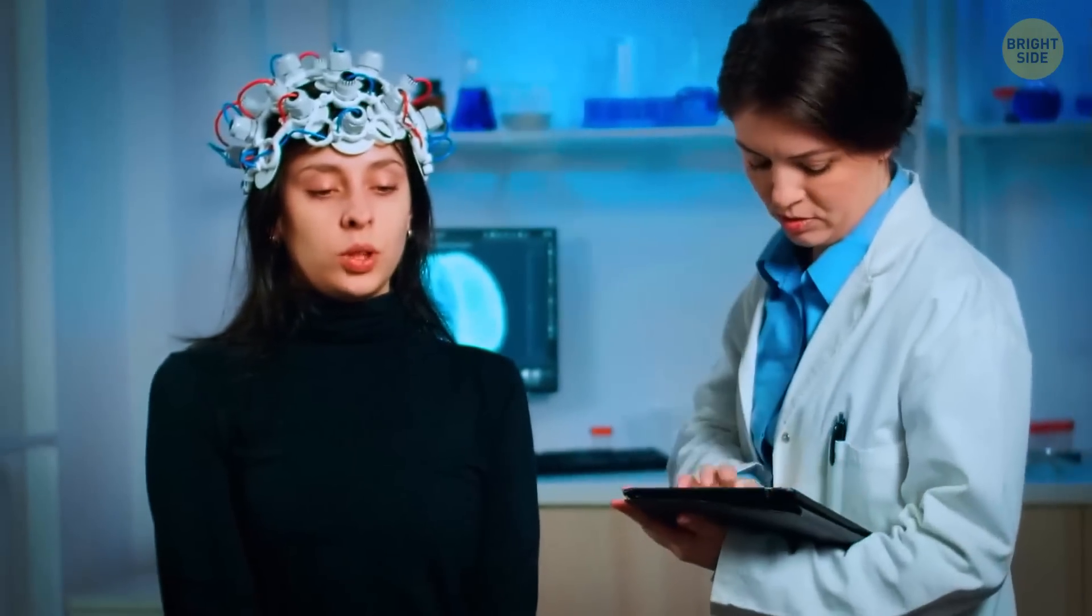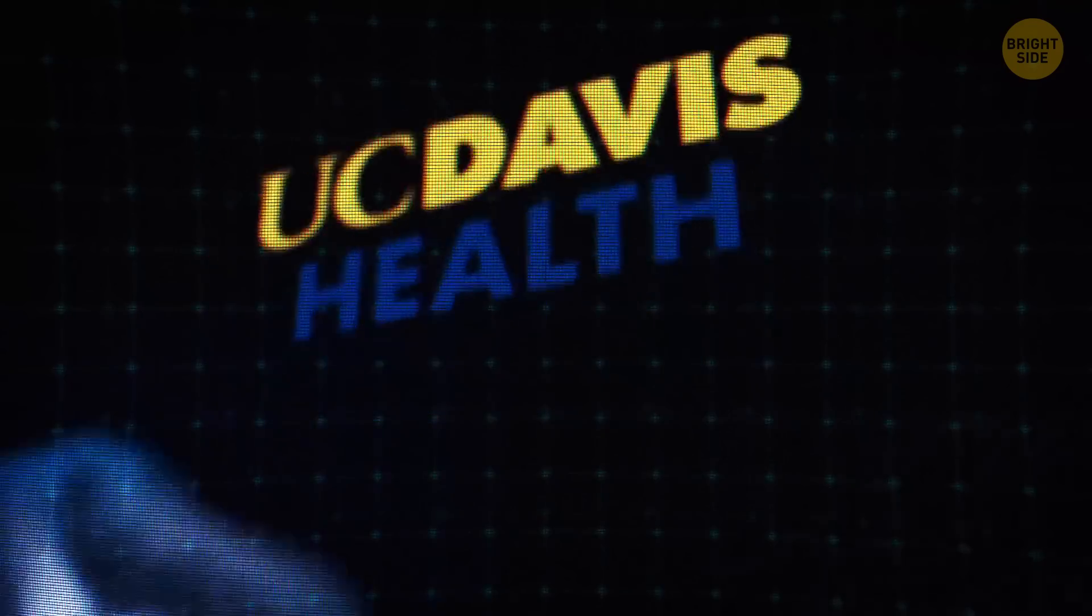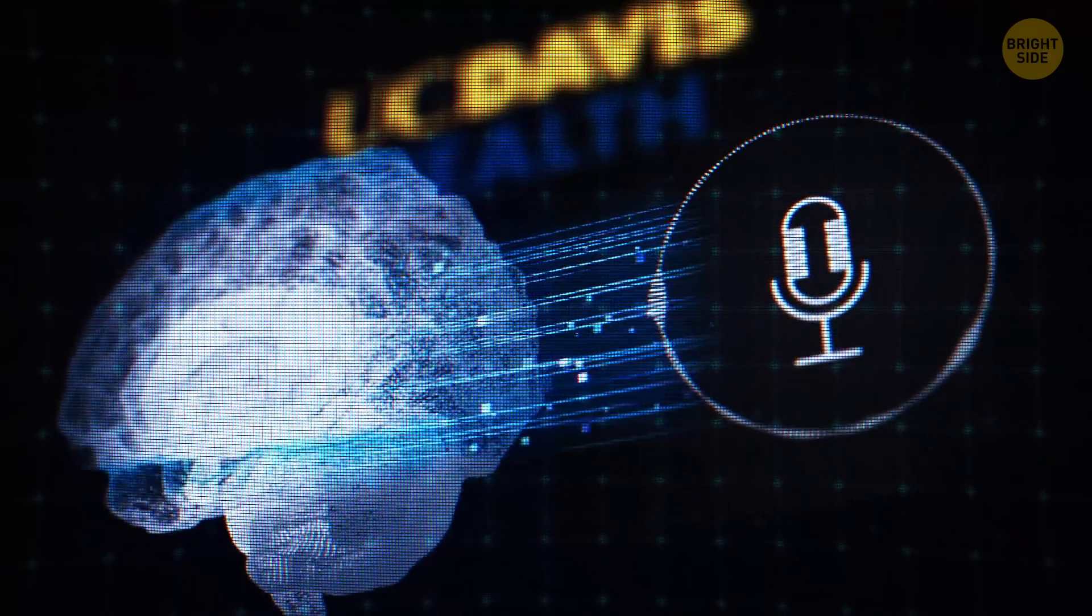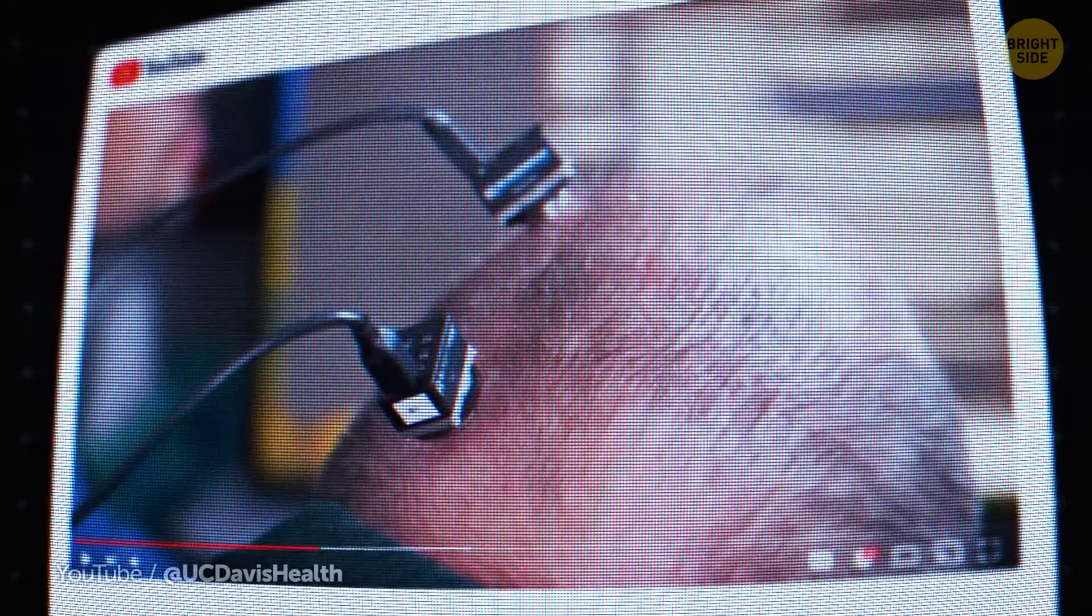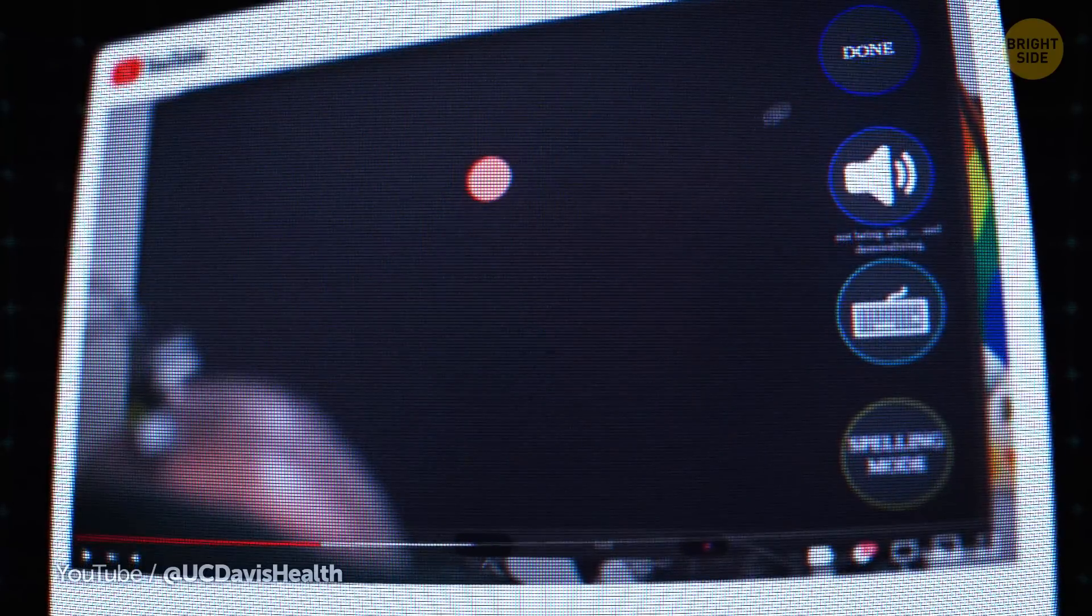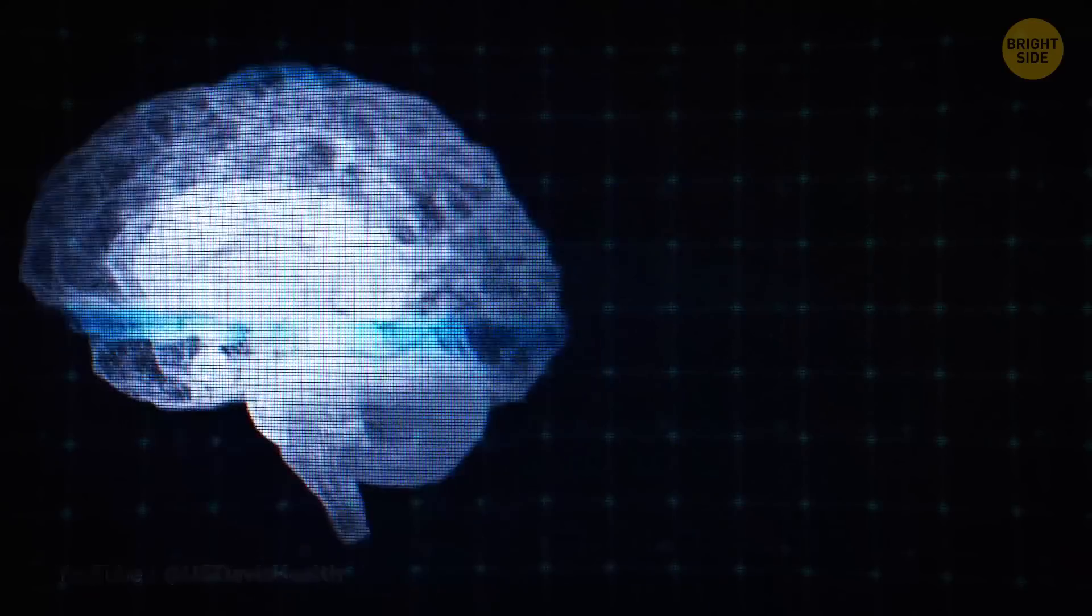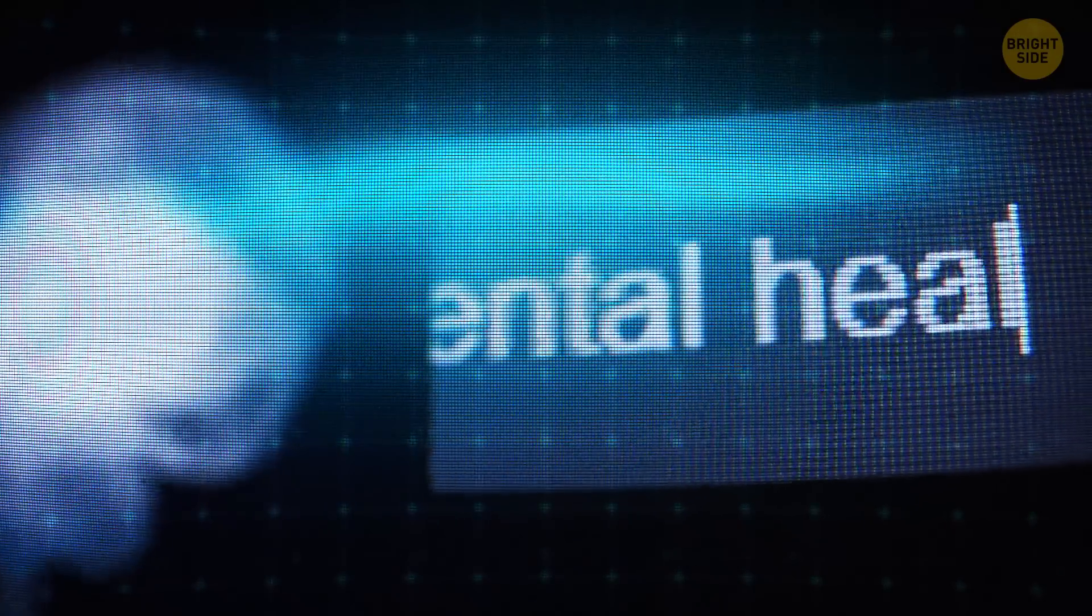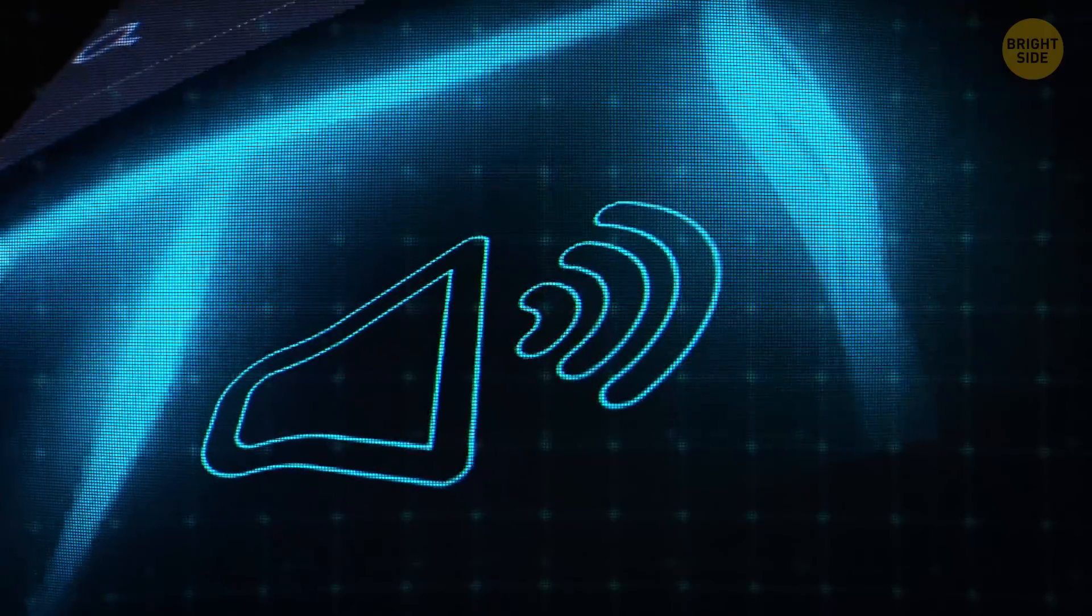While a computer made of human neurons is in the testing stages, scientists at UC Davis Health have invented a new brain-computer interface that could turn brain signals into speech with nearly perfect accuracy, up to 97%. Scientists put special sensors in the brain of a man who had trouble speaking because of his health condition. When they turned on the system, the man could start sharing what he wanted to say within minutes. When someone with a similar condition wants to speak, the new device turns their brain signals into text that appears on a computer screen, and the computer can then say the words out loud.